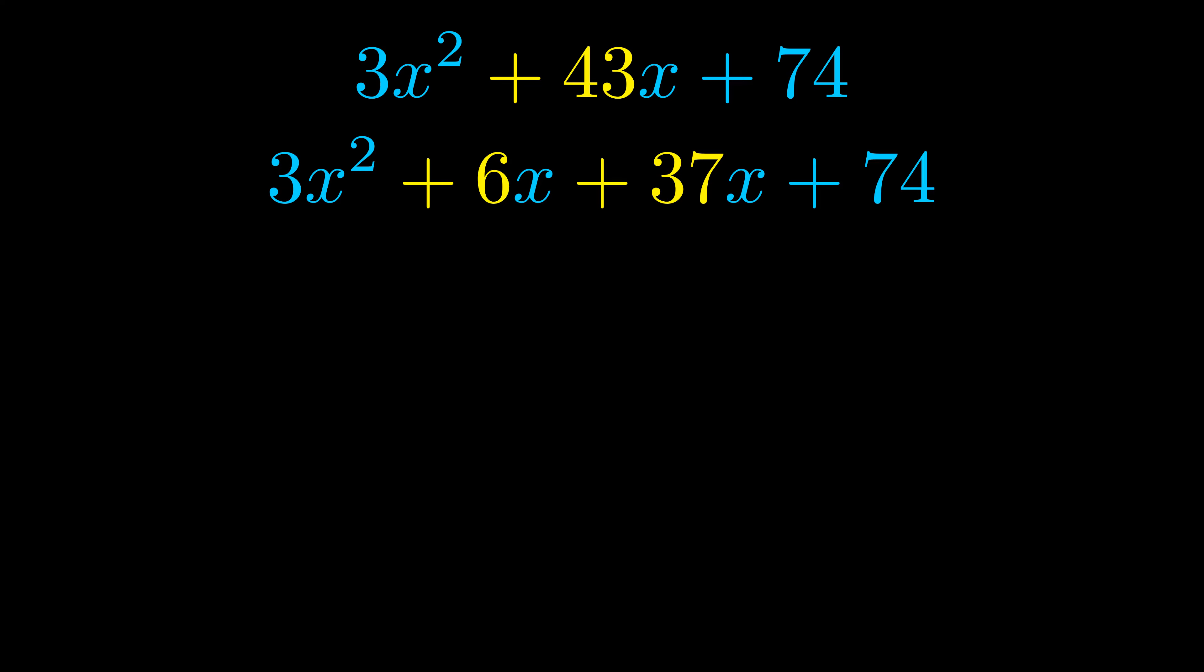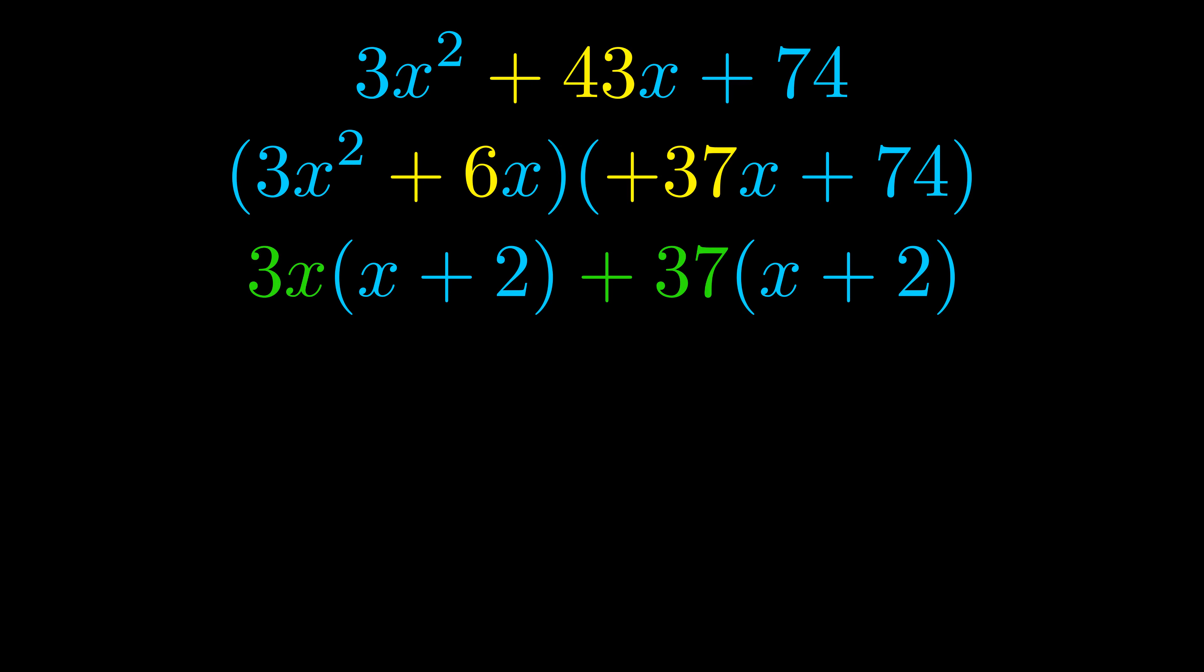Once we've done this we go ahead and we put parentheses around the first term and the last term. And we do that so that we can take the greatest common factor out of both terms. We can see the greatest common factor is now outside in green.